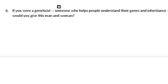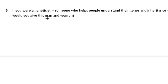The last one, number six: based on your answer, it says if you are a geneticist — someone who helps understand gene inheritance — what advice would you give this man and woman? That's up to you. Based on their Punnett square, what would you tell them about the chances of having a kid with PKU, and what advice would you give them? Alright, that's the first page — hopefully you paused and learned a little bit along the way.